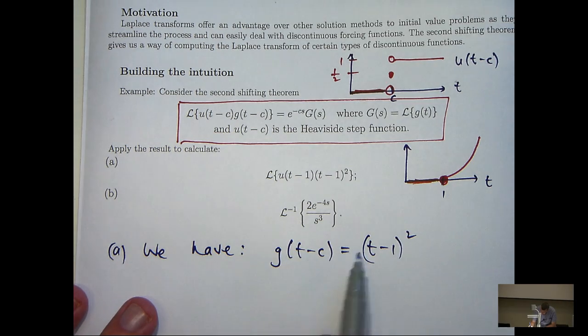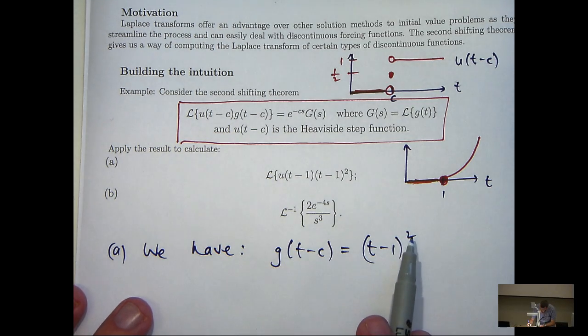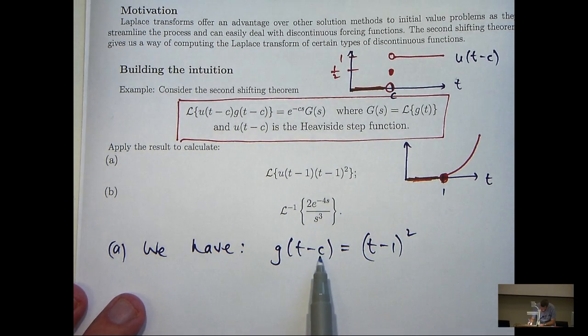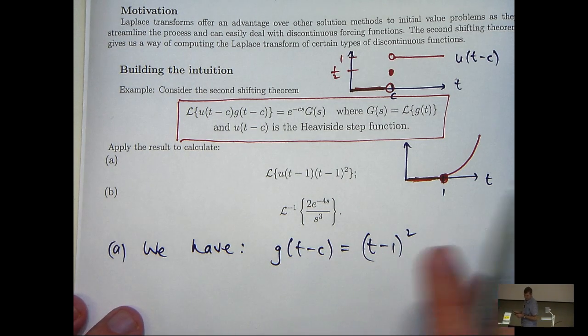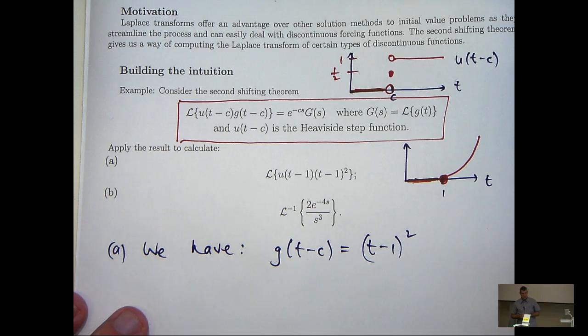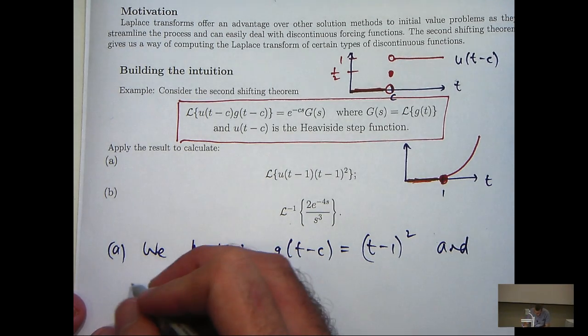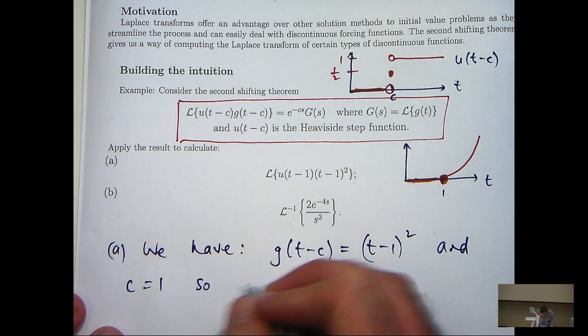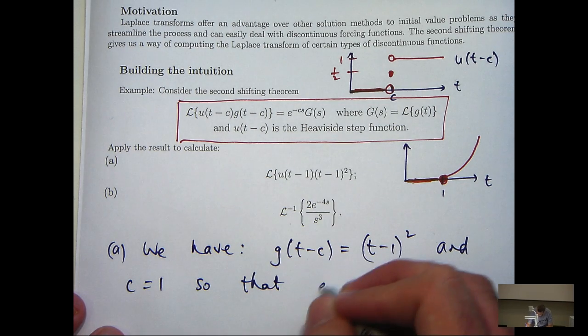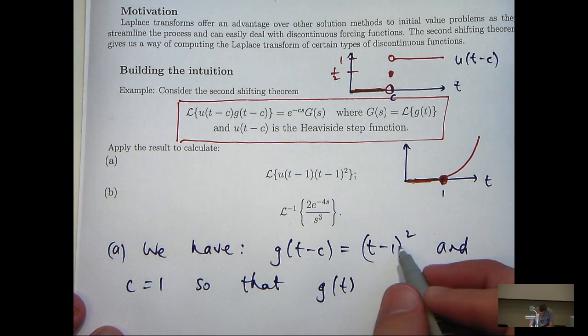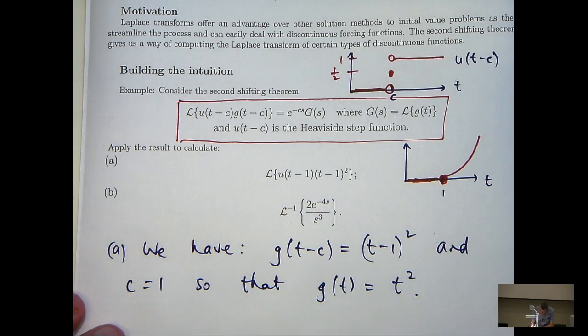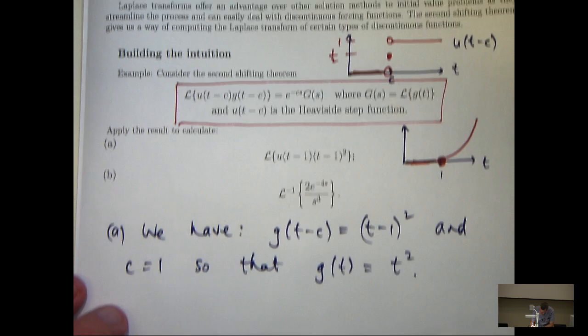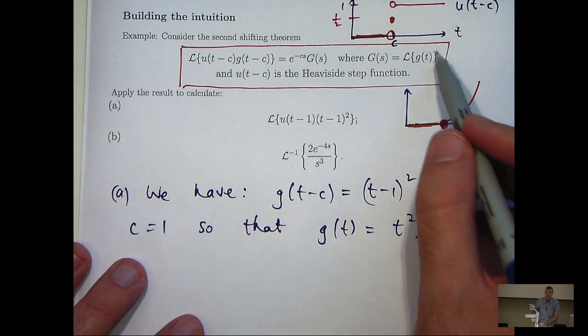So if g of t minus c is t minus 1 all squared, then it seems to make sense to let c equal 1, and then we can form little g of t. So what I do up here is replace t minus 1 in brackets with t and get the following. Okay, so let's calculate this.